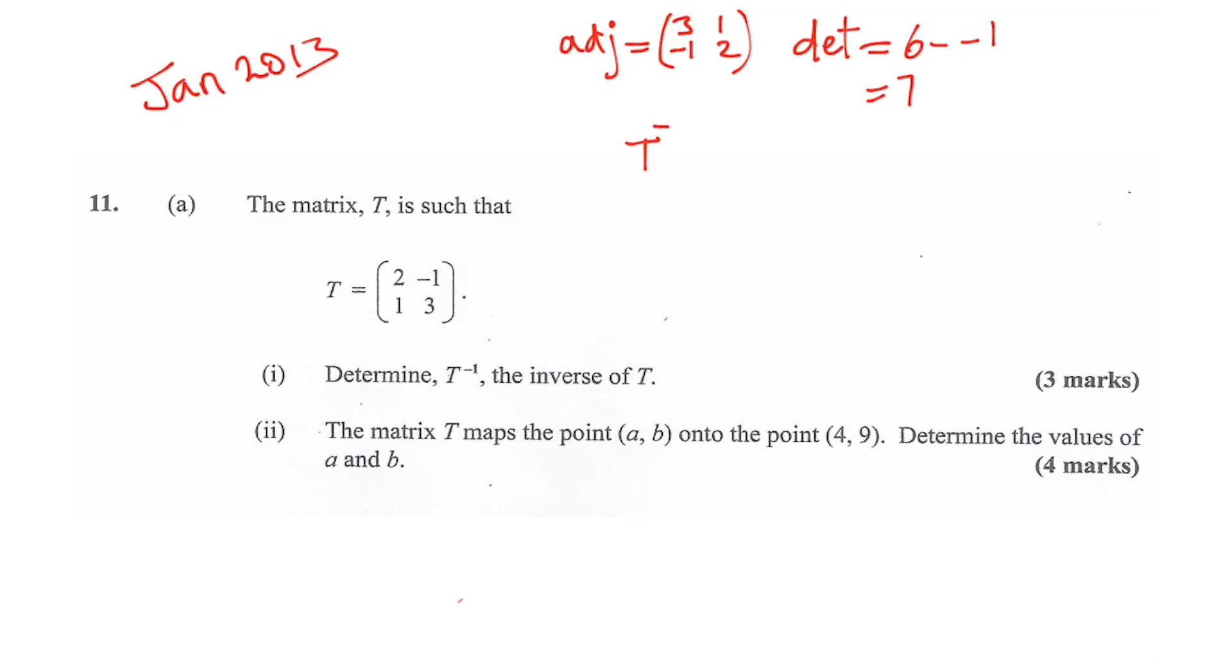Then the inverse T inverse would be one over the determinant times the adjoint: 3, 1, negative 1, 2, which gives me 3 over 7, 1 over 7, negative 1 over 7, and 2 over 7. Alright, so that's the inverse right there.